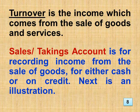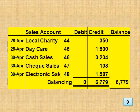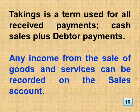Turnover is the income which comes from the sale of goods and services. The sales or takings account is for recording income from the sale of goods for either cash or on credit. Takings is a term used for all received payments — cash sales plus debtor payments. Any income from the sale of goods and services can be recorded on the sales account.